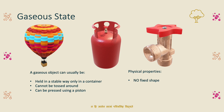In summary, gas has no fixed shape and no fixed volume. Unlike liquid, it is not constant. Gas is highly compressible — for example, a helium balloon can be compressed under high pressure. So gas is highly compressible and its density changes.